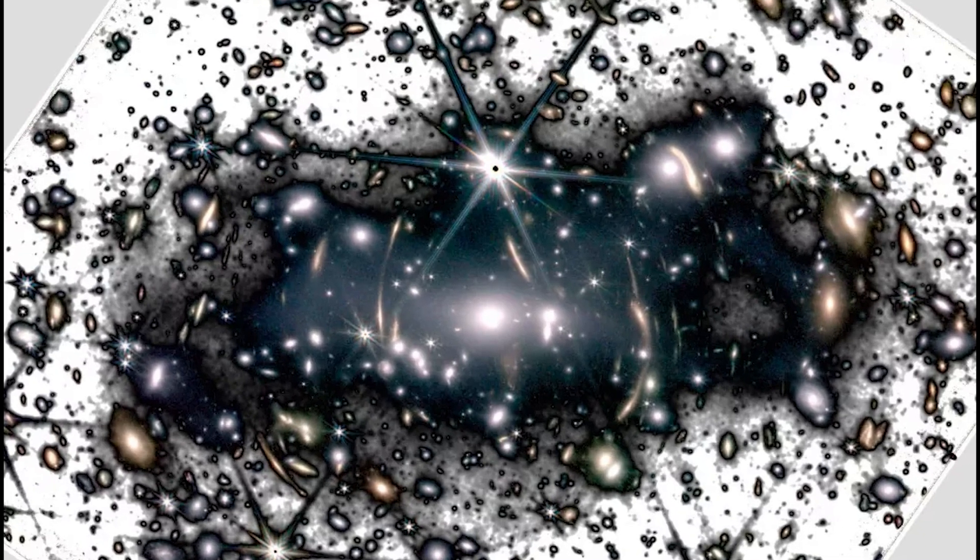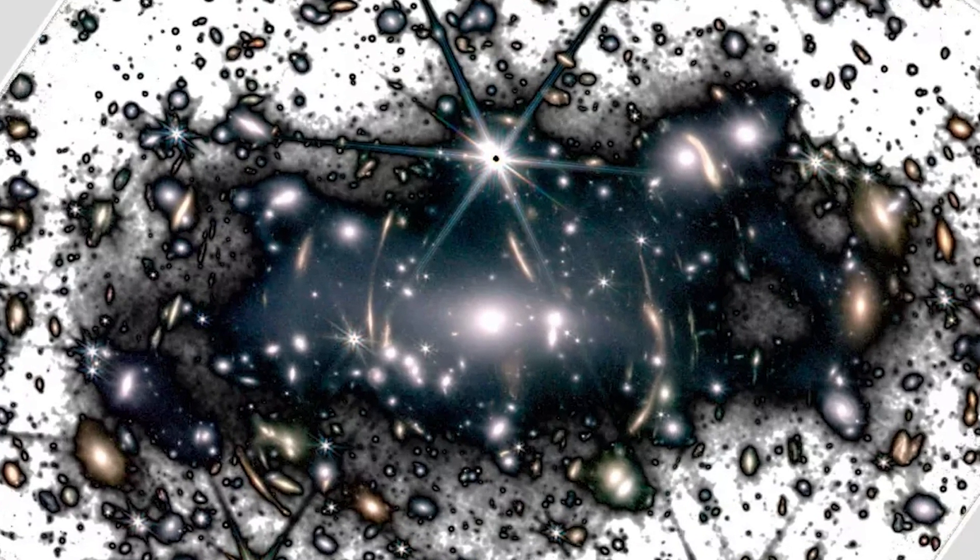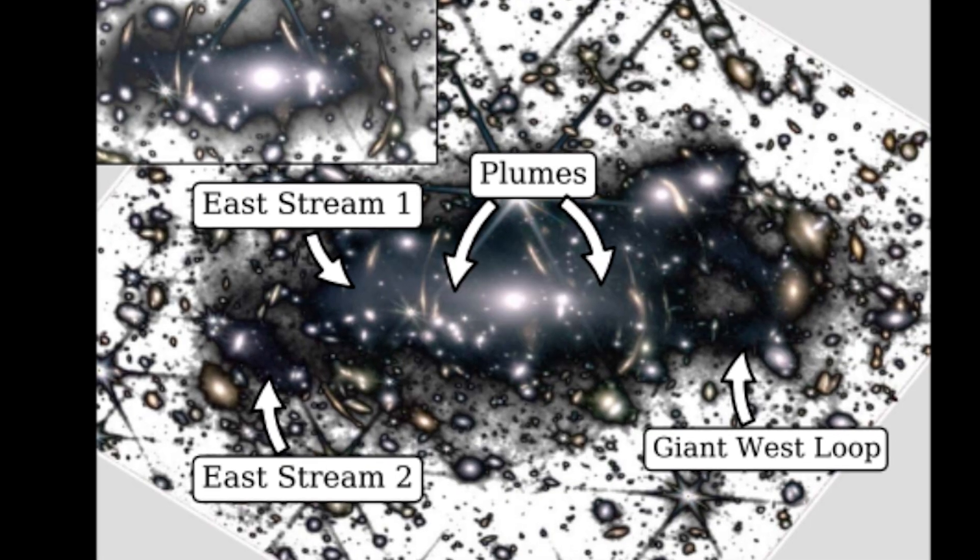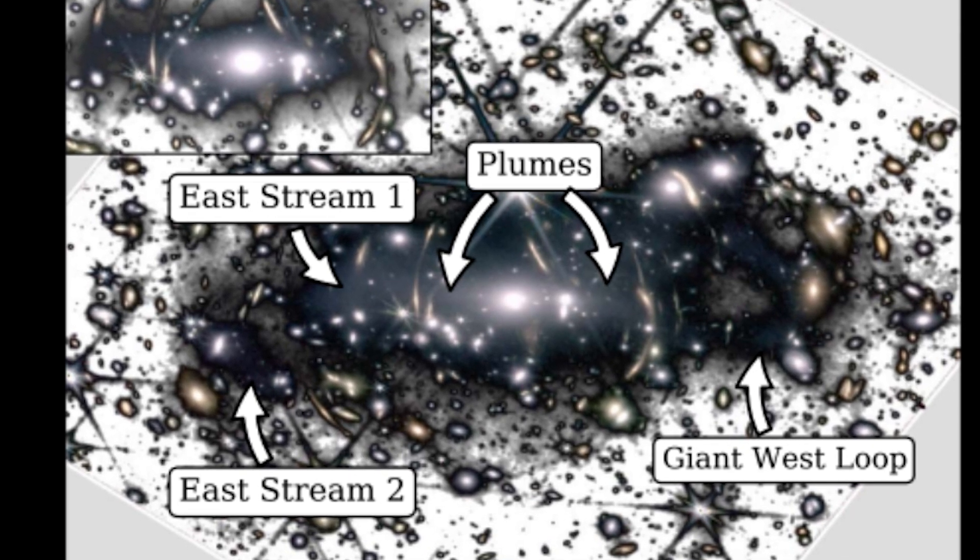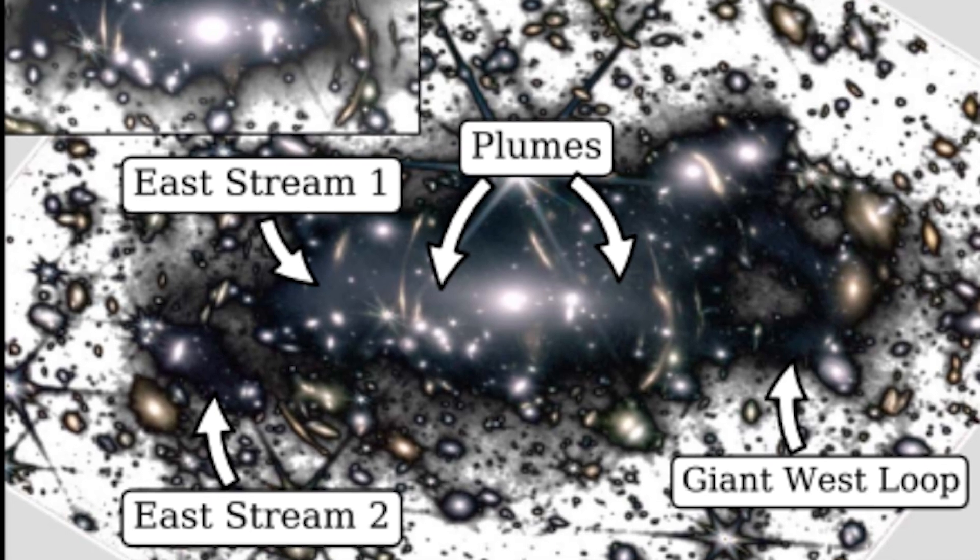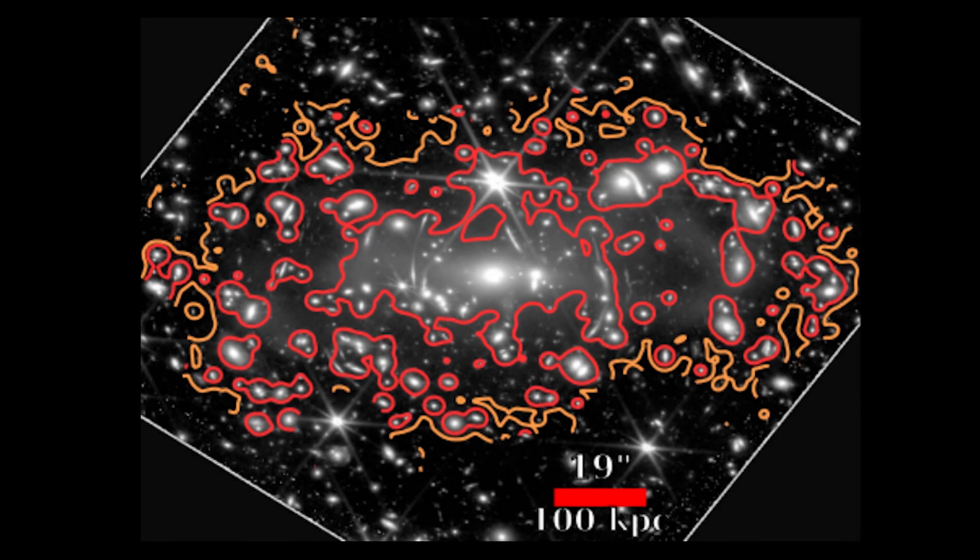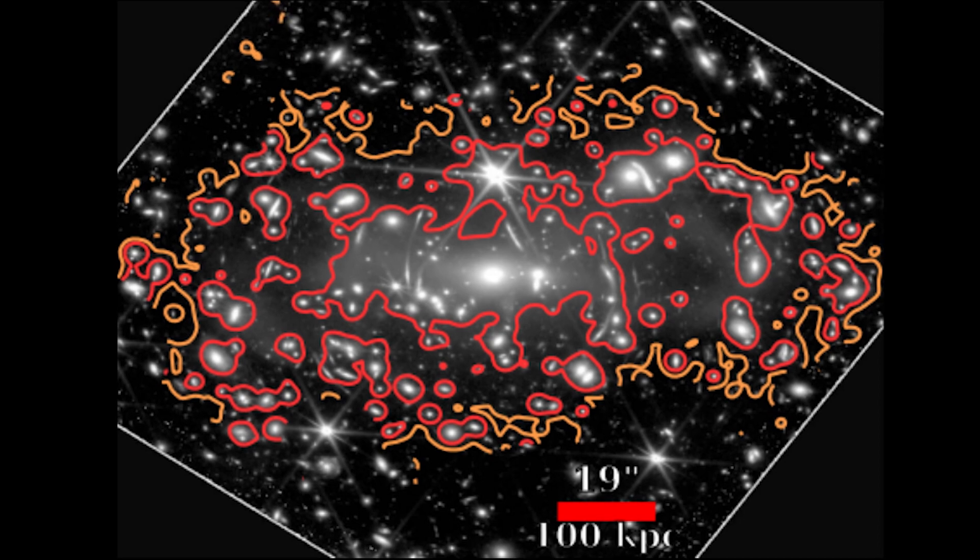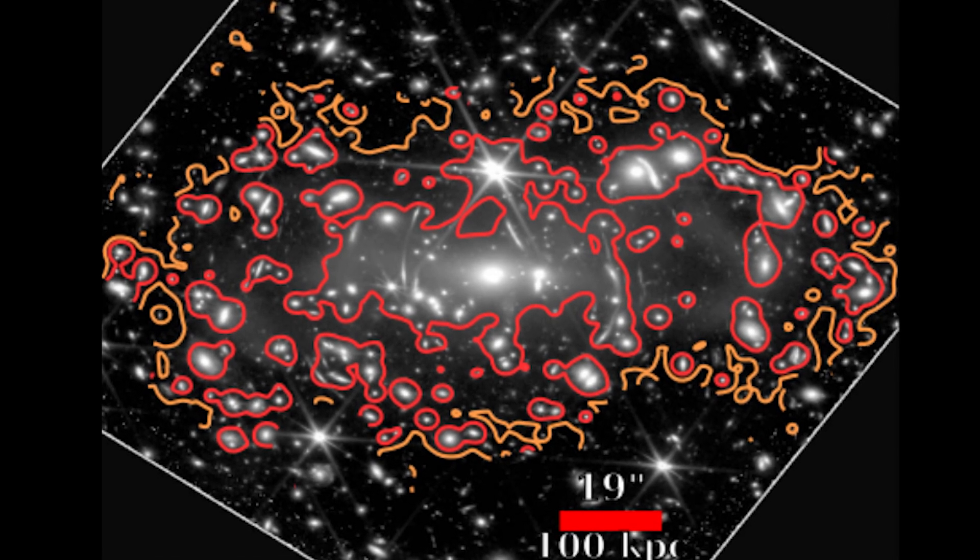In fact, new research confirms that Webb can investigate intracluster light. Using Webb's early-release picture of the SMAC's 723 galaxy cluster, the researchers were able to measure intracluster light to a distance of 1.5 million light-years, which is twice as far as Hubble could previously see.